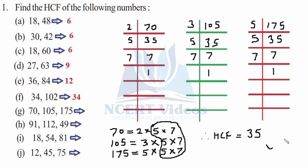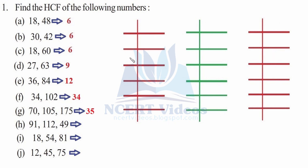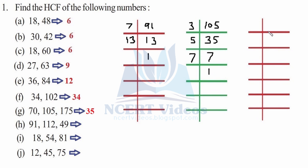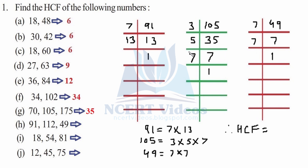Part h: 91, 105, and 49. 91 is 7×13, and 13 is a prime number. For 105: 3×5×7. For 49: 7×7. Only 7 is common amongst all three numbers. So the HCF would be 7 here. This is how we pair it by underlining it. That was your part h.